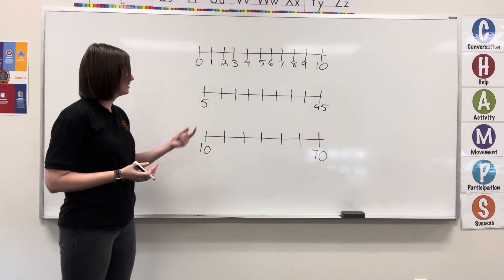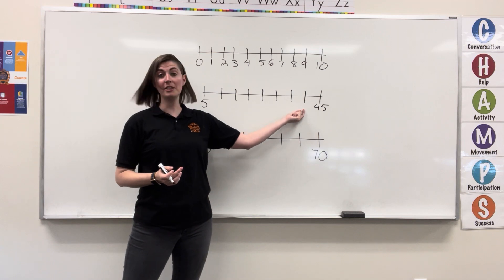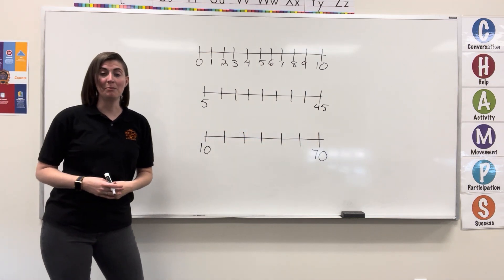Our next number line starts at 5 and ends at 45. Now, there's not enough dashes for this to be counting by 1's. So let's see if this one's counting by a different set.